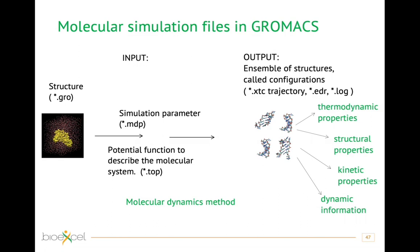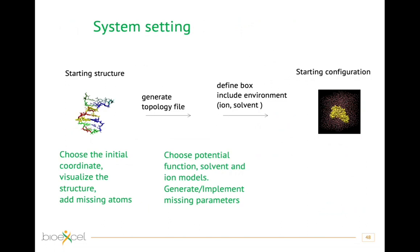The first steps to set up the system are: choose initial coordinates, visualize the structure, add missing atoms, and generate a topology to associate all parameters to all atoms of the macromolecule. Then define the box, add the solvent, and add ions — ensuring all solvent and ion models are consistent with the macromolecule model. If any parameters are missing, generate them. At the end of these steps you have the starting configuration ready for simulation.